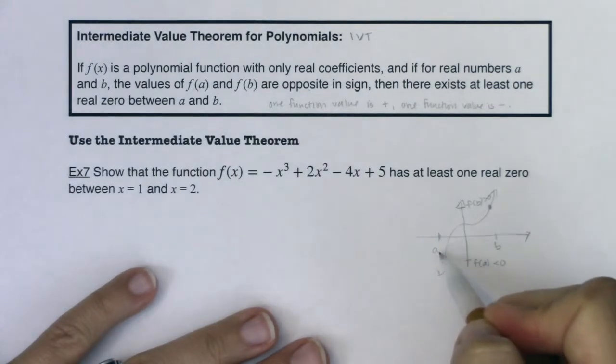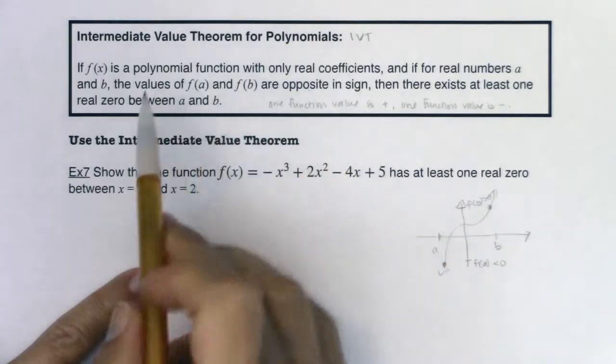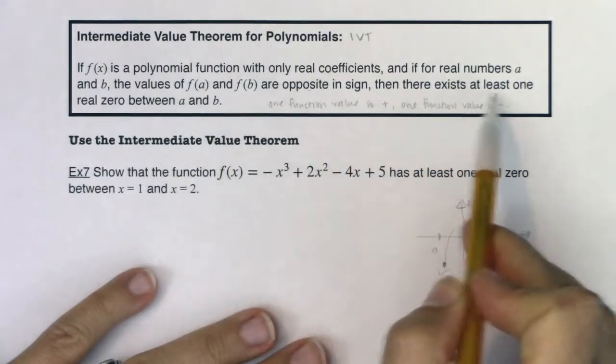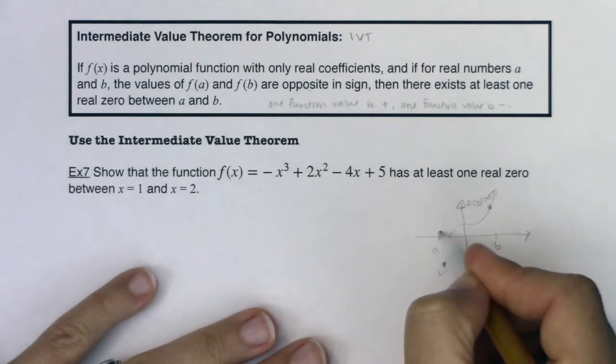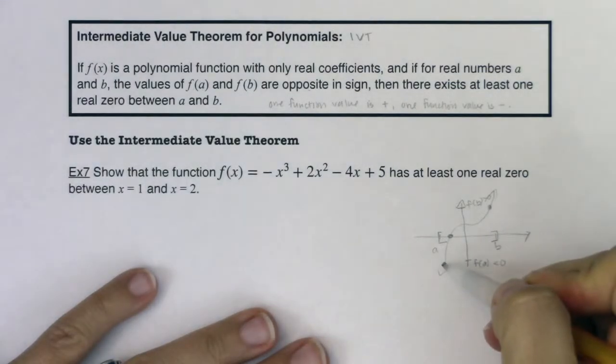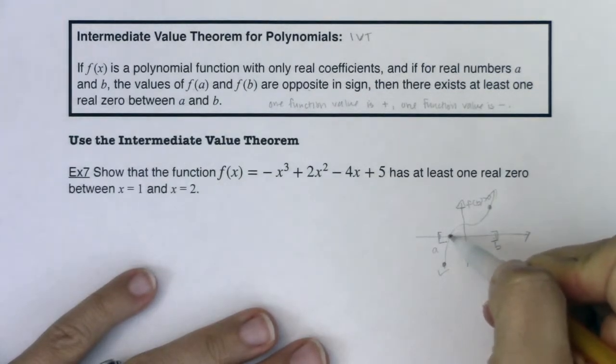So I went from, or I started on the x-axis with two real numbers a and b, and their function values are opposite in sign. So f(a) and f(b) are opposite in sign, then there exists at least one real zero between a and b, meaning there has to be an x-intercept somewhere between a and b. And you can see it right here, there's the x-intercept. Because basically, we're saying if there's a point below the x-axis, and one above the x-axis, between these two x values, you have to pass through the x-axis.